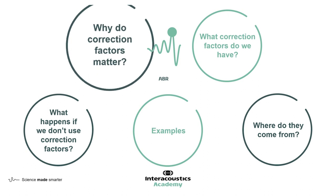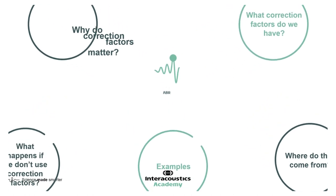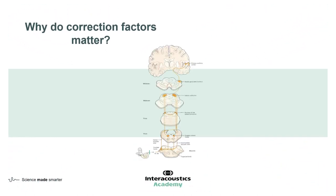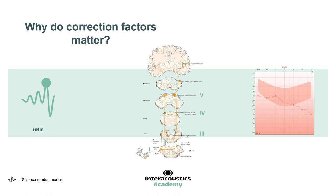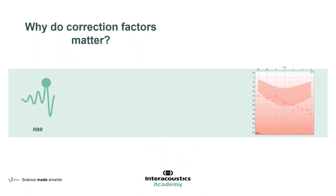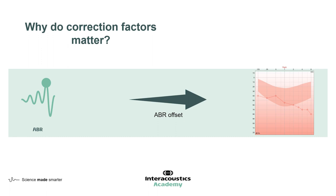Why do these correction factors matter? When performing auditory brainstem response testing, it's important to remember that the ABR is generated only as high as the brainstem, whereas our pure tone audiogram results or behavioural thresholds are generated much further up the pathway into cortical and consciousness regions where a decision is made to respond to the stimulus. So we need a way of relating the ABR results to the pure tone audiogram or behavioural thresholds, converting our ABR results into something that resembles and relates to the pure tone audiogram more closely.